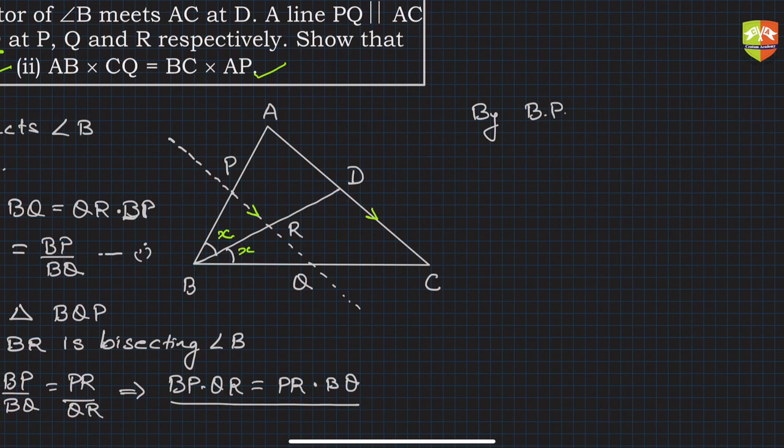BC/QC = AB/AP. Now if you simply cross multiply, you get BC × AP = AB × QC.